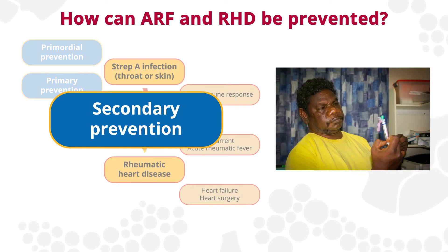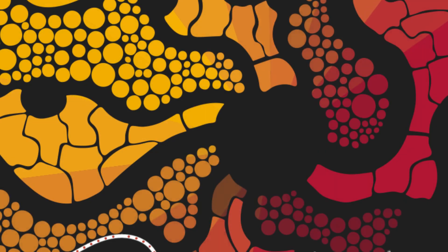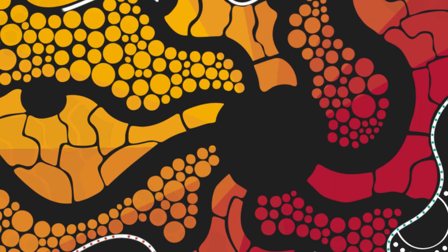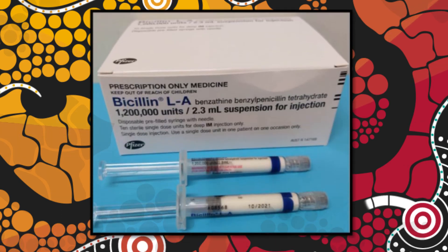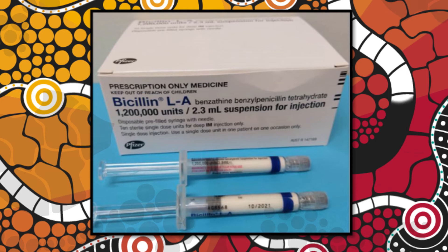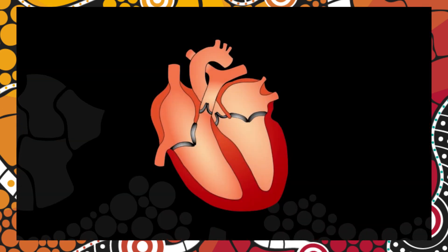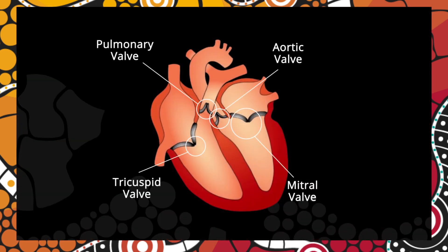Secondary prevention aims to prevent future strep A infections and the recurrence of acute rheumatic fever. In Australia, the recommended primary and secondary prevention treatment is penicillin. Penicillin kills strep A and is effective at preventing recurrent ARF; it is safe to give during pregnancy and breastfeeding. Once a person has had acute rheumatic fever, they are more likely to get it again, and each time more damage can be caused to the heart valves.